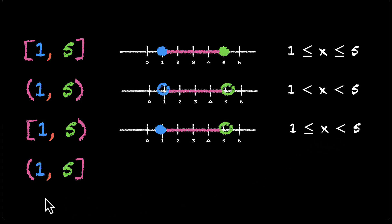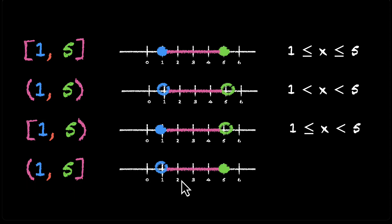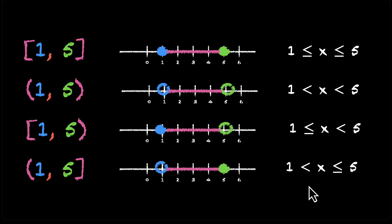Finishing with the last case: 1 not included and 5 included — open bracket for 1, close bracket for 5, written as (1, 5]. On the number line, 1 will be an open circle and 5 will be a filled circle. Algebraically, this is written as 1 < x ≤ 5.